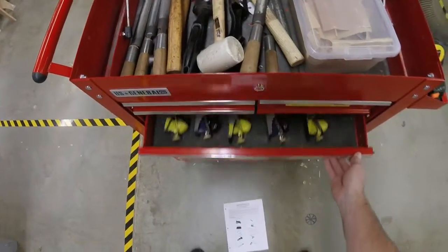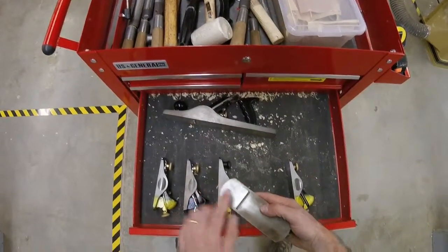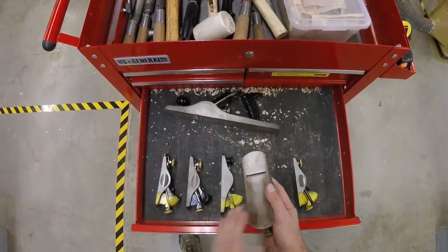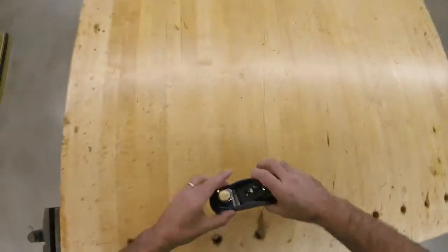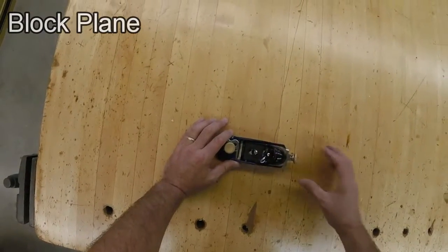Next on the list is a block plane that lives in this big drawer here. This is like a chisel, but with a flat shoe on it to make a flat surface. These might come apart while you're using them. They're pretty easy to put back together. To adjust this, simply flip this lever sideways.